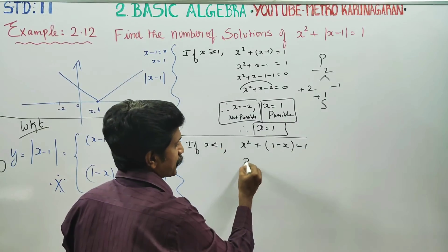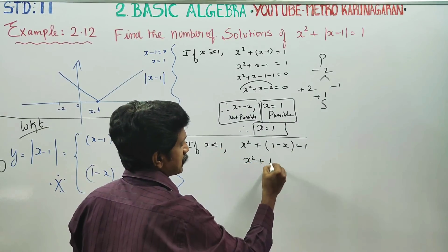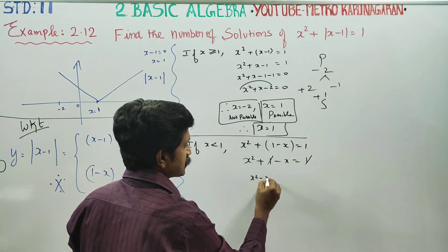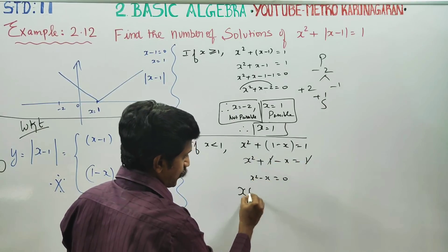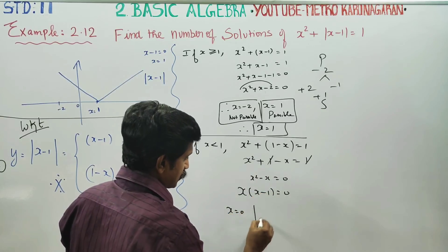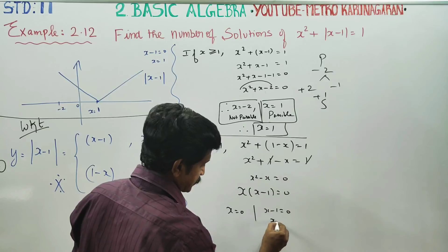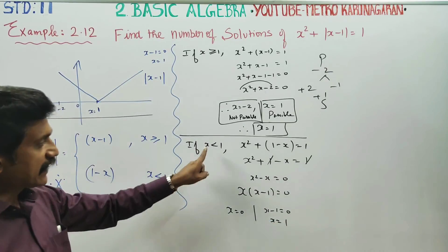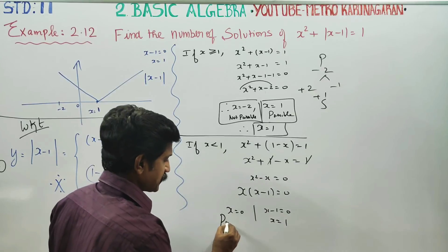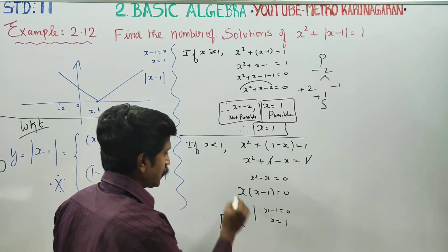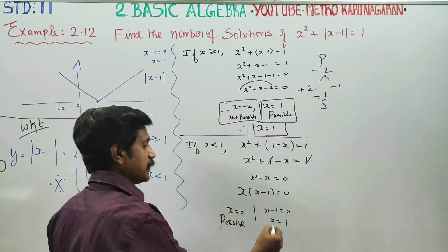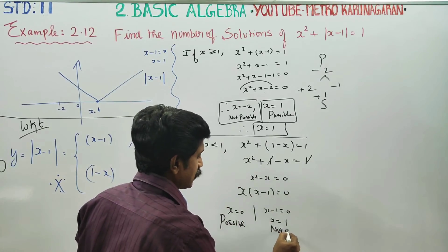For Case 2, we need x² plus (1-x) equals 1. Simplifying: x² minus x equals 0, so x is common, giving x(x-1) equals 0. Therefore x equals 0 or x equals 1. Since x must be less than 1, x equals 1 is not possible, but x equals 0 is possible.